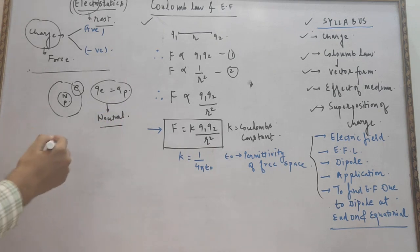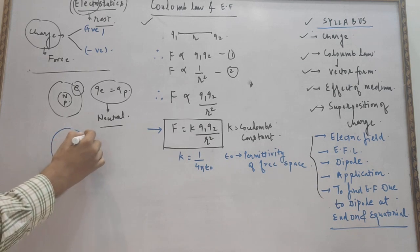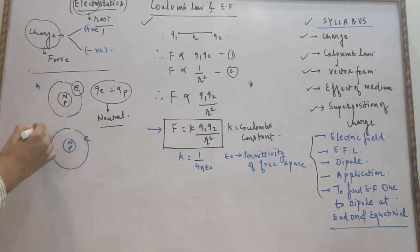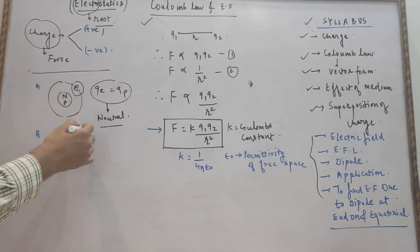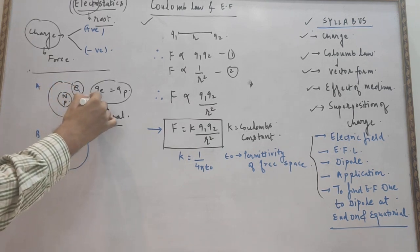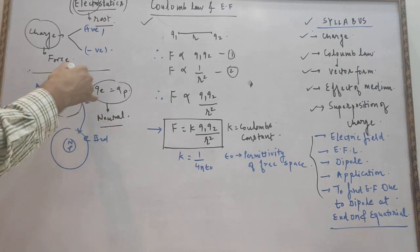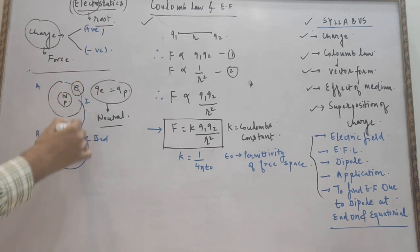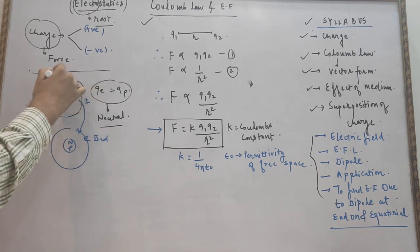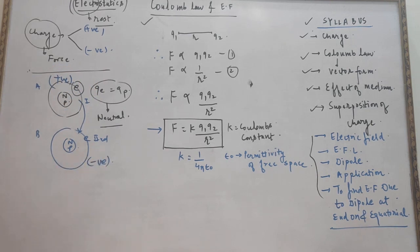Suppose we are rubbing two bodies — body A and body B. When we rub them, some of the electrons from the first body migrate to the second body. The body that loses electrons will acquire a positive charge, and the body that gains electrons will acquire a negative charge. In this manner, charges are generated in a body.